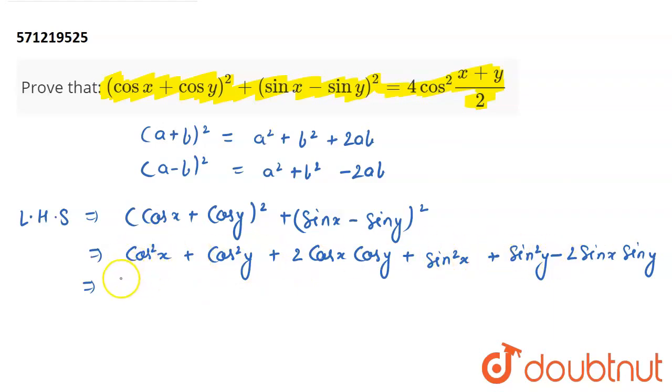So it becomes cos²x + sin²x + cos²y + sin²y + 2(cos x cos y - sin x sin y).